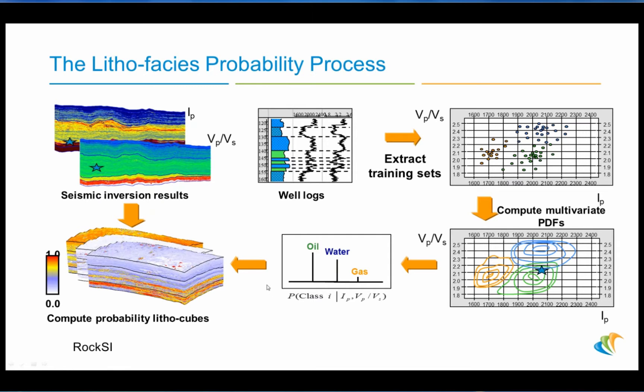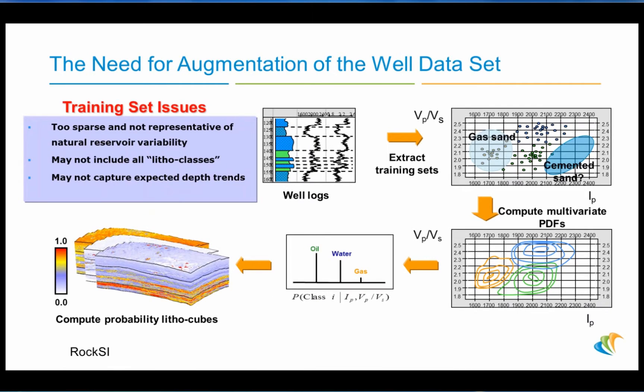This is also done in Rock SI. Using this technique, sometimes we observe that we have too sparse data for a particular lithophases type, or it may not be representative of the natural reservoir variability — it may not include all lithophases that we could reasonably expect in this survey area. It may also not capture expected depth trends due to limited interval in some of the well logs.